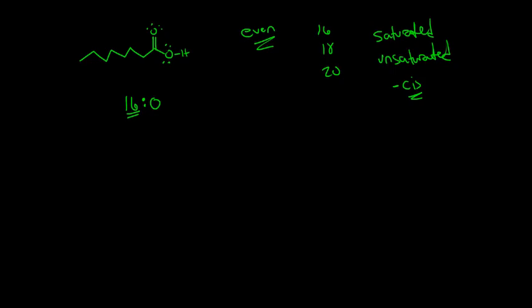16:0 means we have a 16-carbon fatty acid with no double bonds, with a carboxylic acid functional group on the last carbon. If double bonds are present, we indicate that by putting one, two, or any number after the colon to show how many double bonds are present.